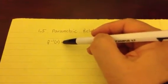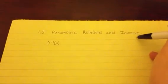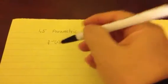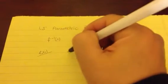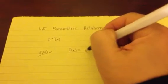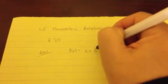Today we're going to work on section 1.5, specifically the inverse part. So if you see f of negative 1 of x, you know you're going to find the inverse. Let's go ahead and start with example number 1, where we have f of x is equal to x plus 5.